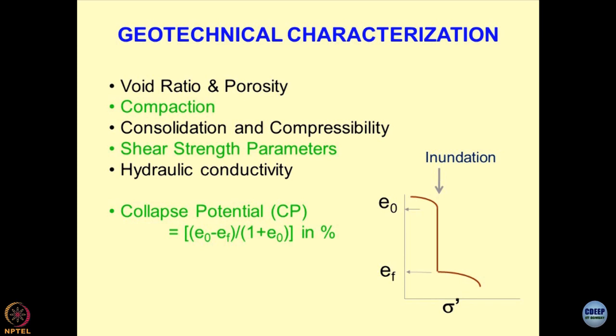E₀ is the initial void ratio and E_f is the final void ratio at a given effective stress σ′. The quantity 1 + E₀ represents the unit volume of the soils. Since we are dealing with industrial byproducts quite a lot, we have to deal with the collapse potential-based classification scheme.